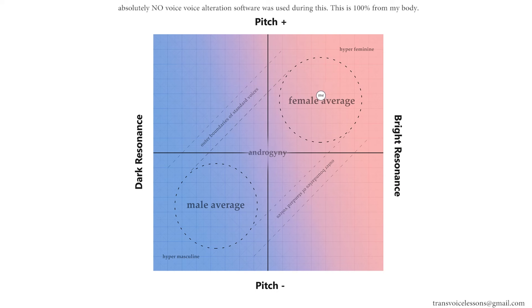I'm gonna start kind of in the middle of the female average here, and I'm just gonna slowly start to bring the pitch down a little bit — so now I'm in the kind of bottom part of the female average. Then I'm actually just gonna go all the way up into the very extreme corner of the female voice. Now I'm actually brighter and higher than a lot of female voices. I'm gonna keep the resonance the exact same and just slowly start to bring the pitch down over time, but keep the resonance the exact same. And now I'm all the way down here with a lower pitch but really, really bright resonance.